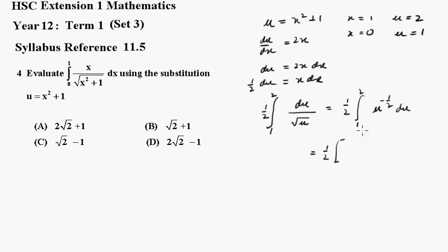Increase the exponent by 1, we get a half, and 1 over a half becomes 2. So it's 2u to the half between 2 and 1. We take that 2 out and it cancels. That becomes the square root of u between 2 and 1.